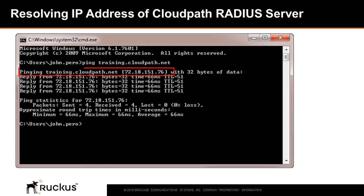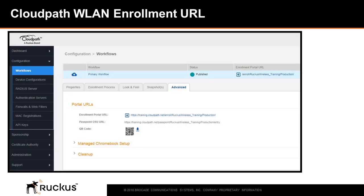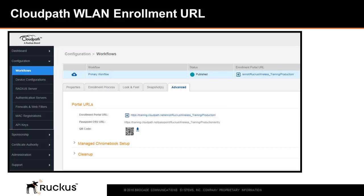You can do this by pinging the name — in our example, training.cloudpath.net — and it will resolve the IP address. Another piece of information you'll need is the CloudPath wireless LAN enrollment URL. This will tell the Ruckus Cloud portal to direct the client connecting to this CloudPath network to the CloudPath ES server for processing the workflow. This URL can be obtained by going to the CloudPath ES configuration tab under the workflow Advanced tab.